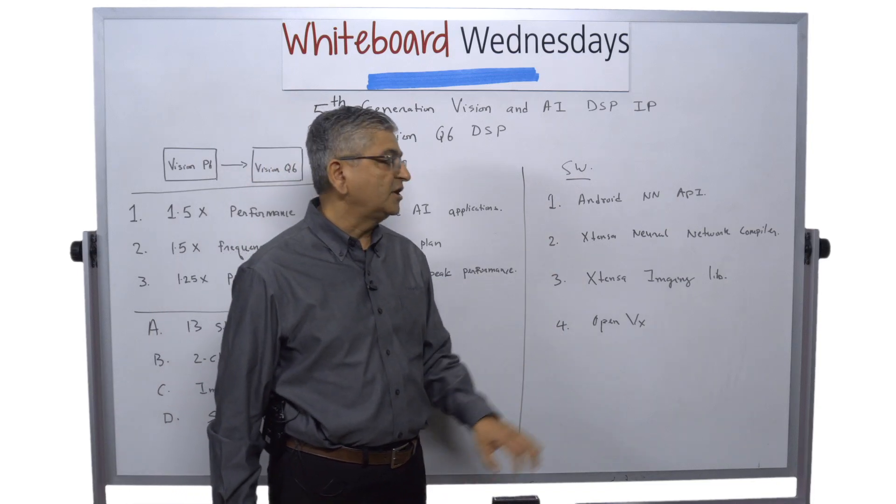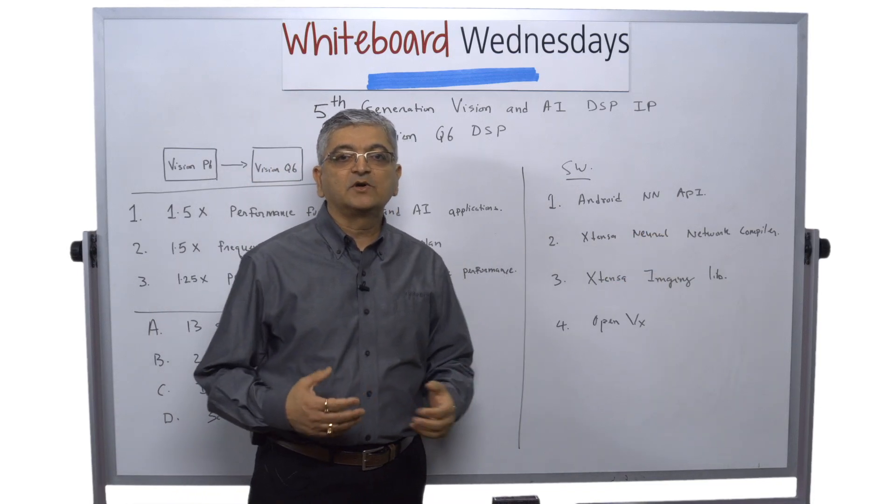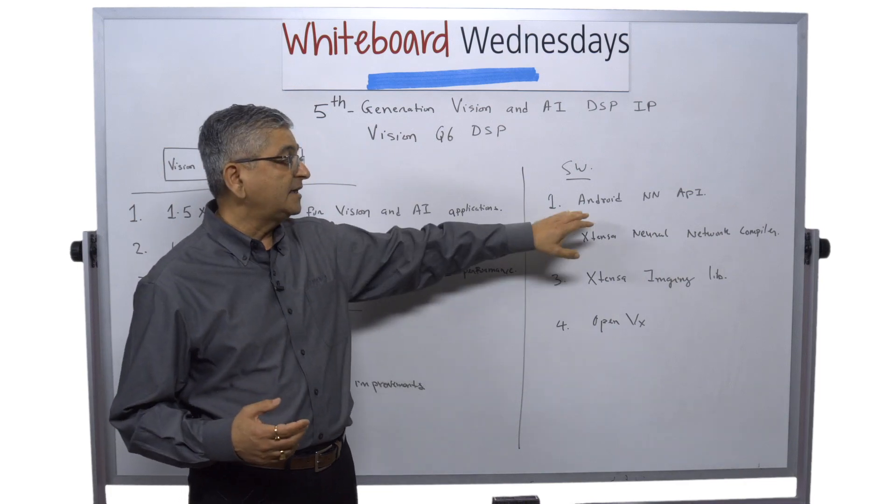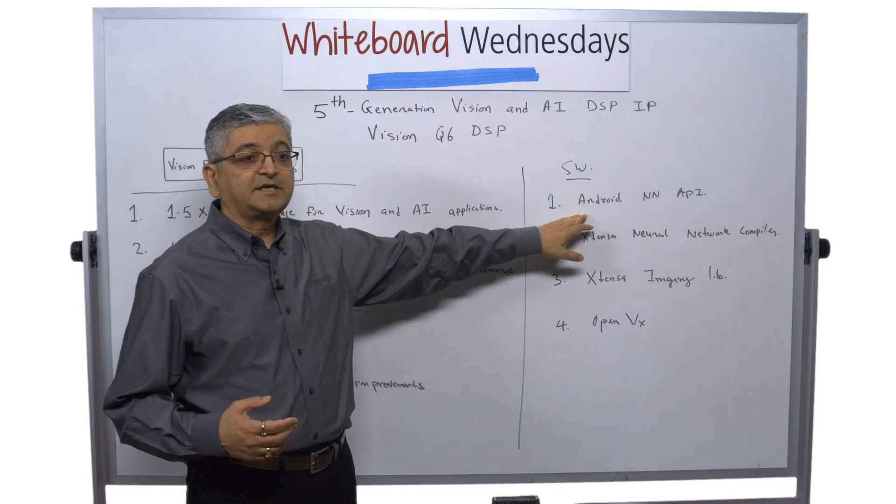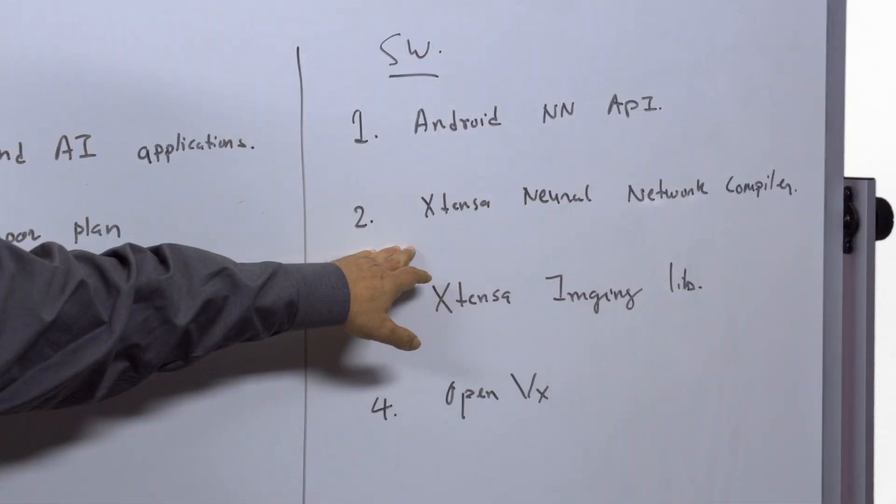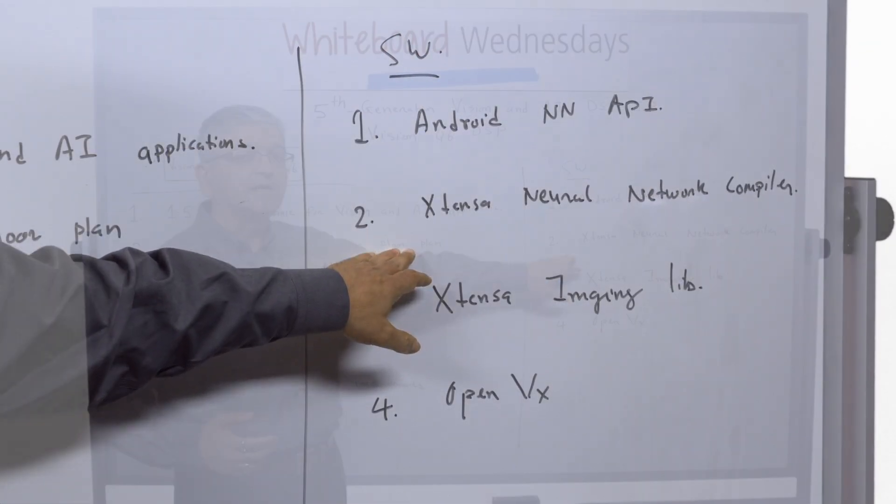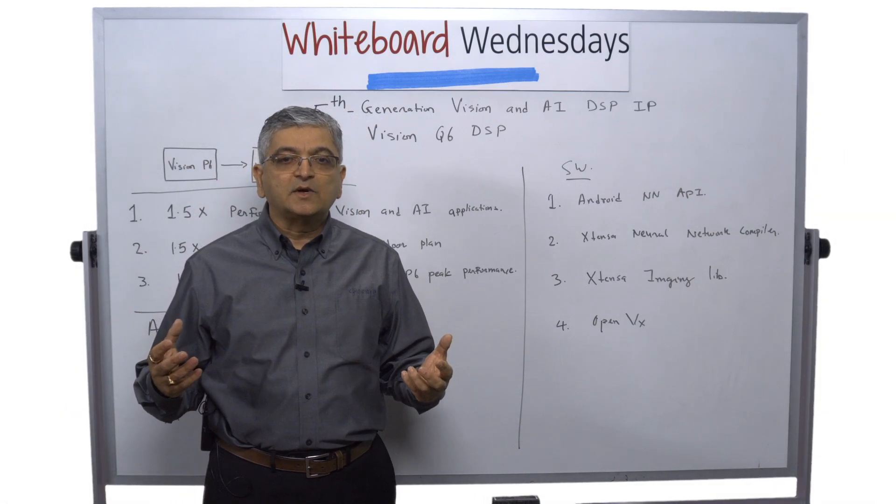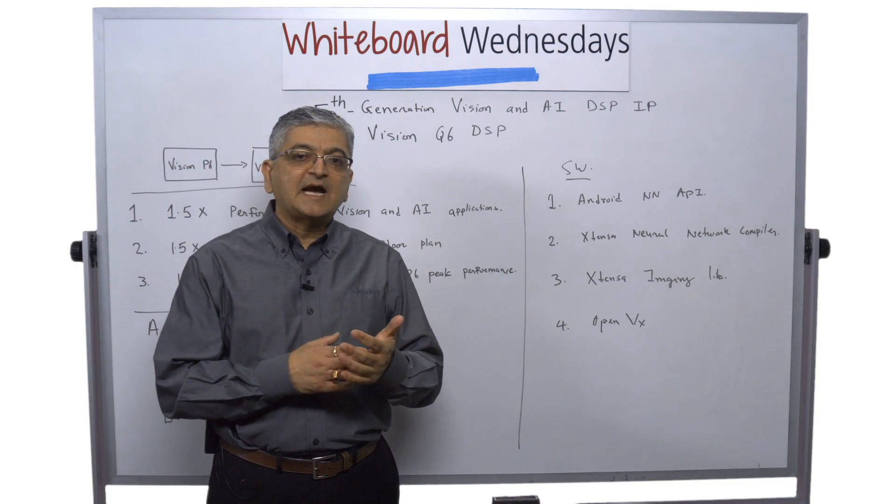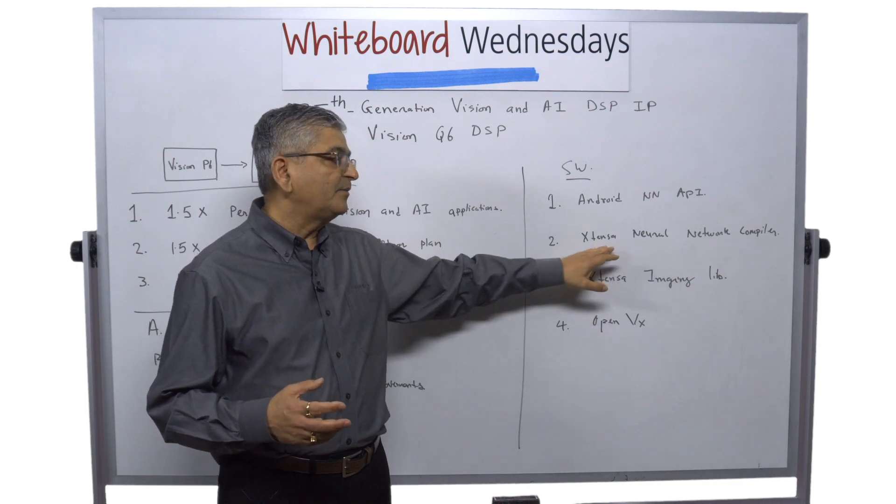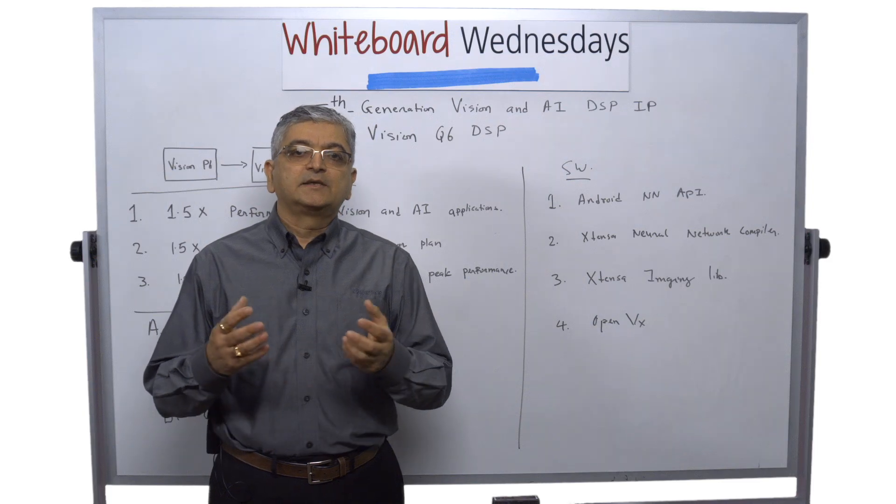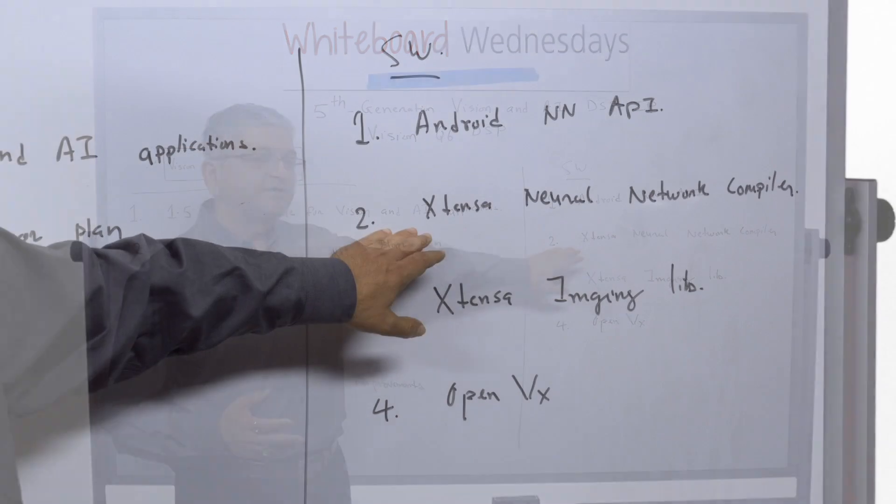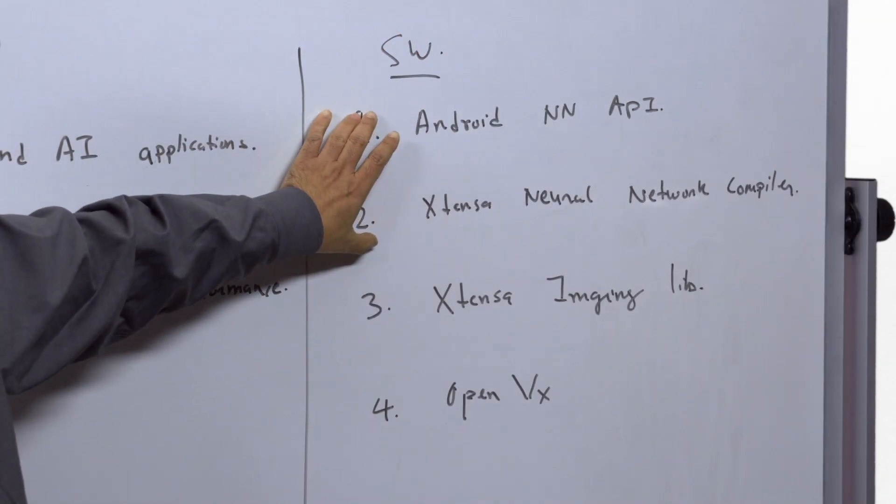On top of it, we are also providing Android Neural Network API. With the support of this, any product that utilizes our Vision Q6 DSP can take advantage of acceleration on Android platform. We also have support for Extension Neural Network Compiler. What this allows you is that if you train your neural network offline using Caffe or TensorFlow, we can utilize our compiler to generate highly optimized 8-bit fixed-point code on Vision Q6 DSP. These are AI software stacks.